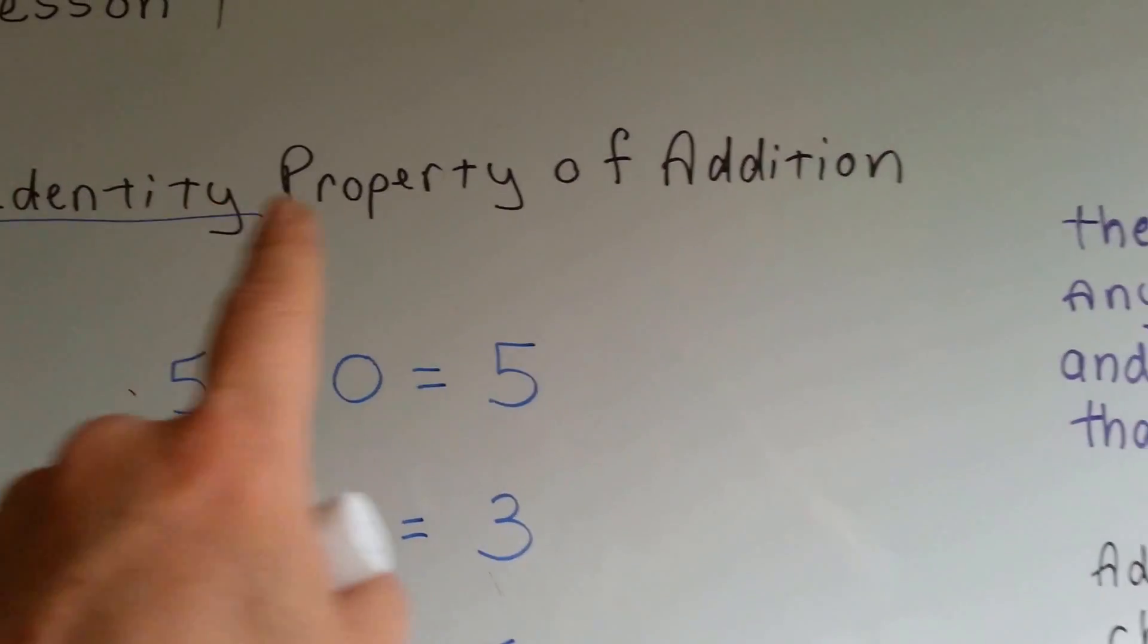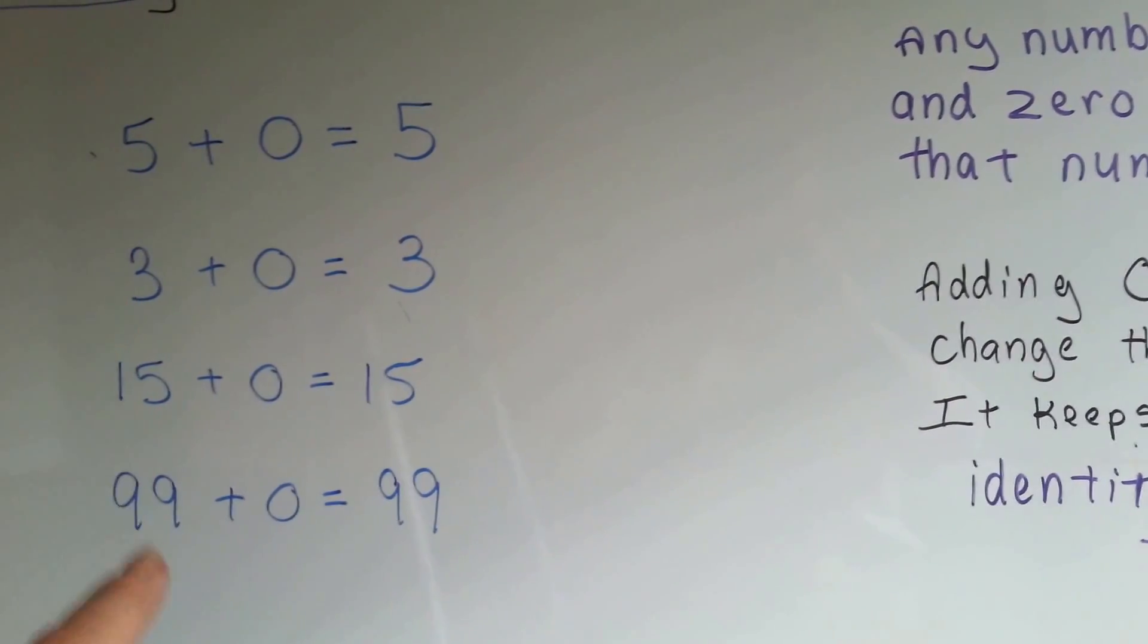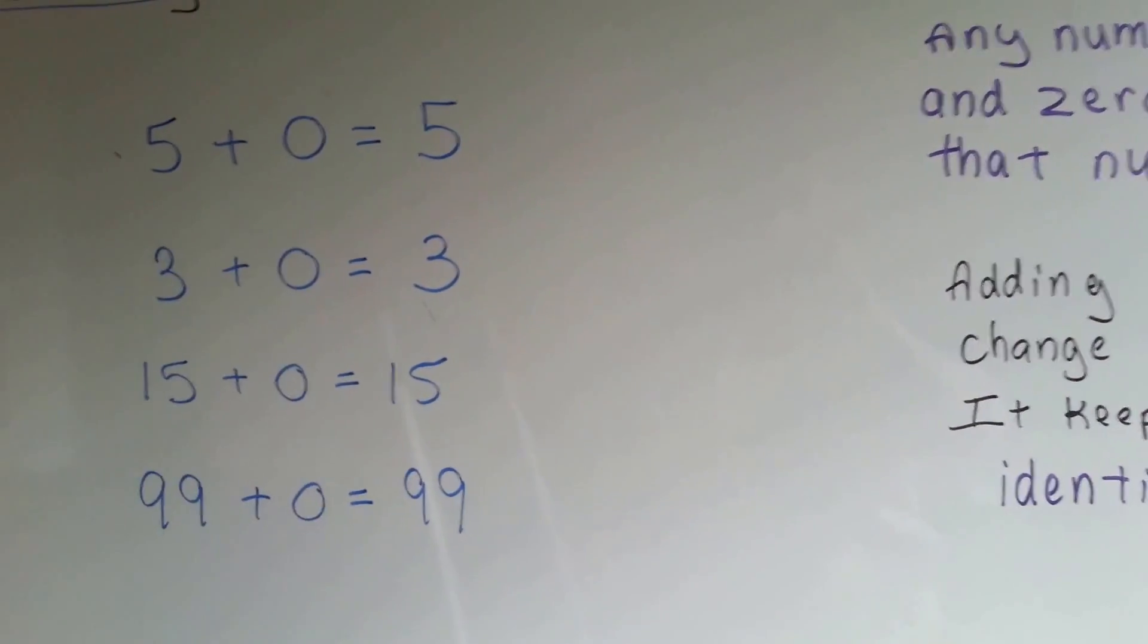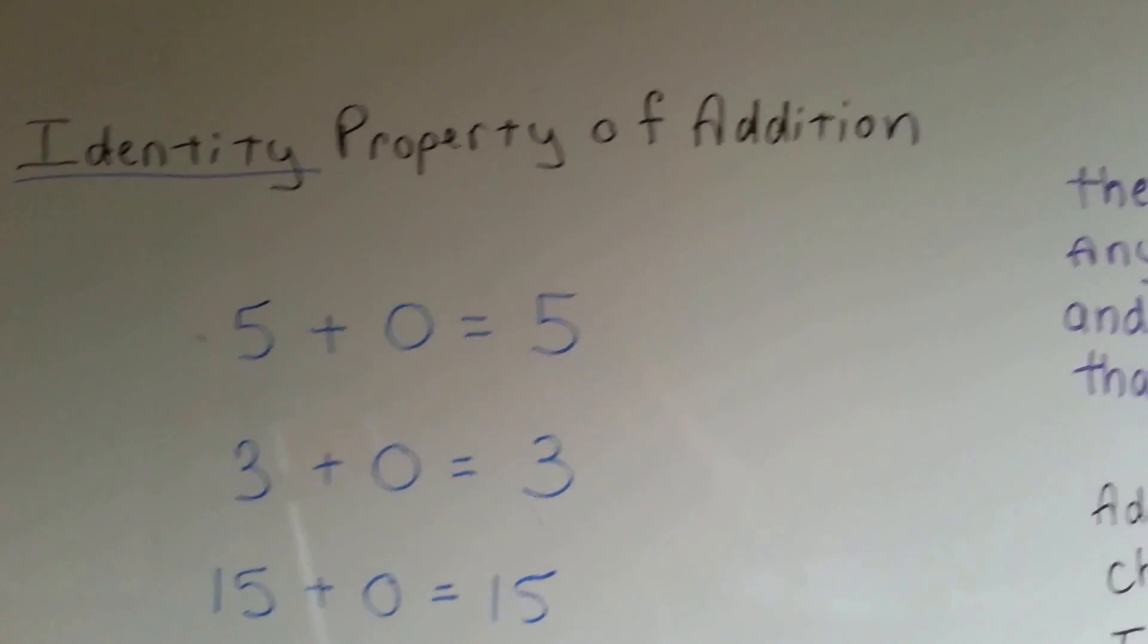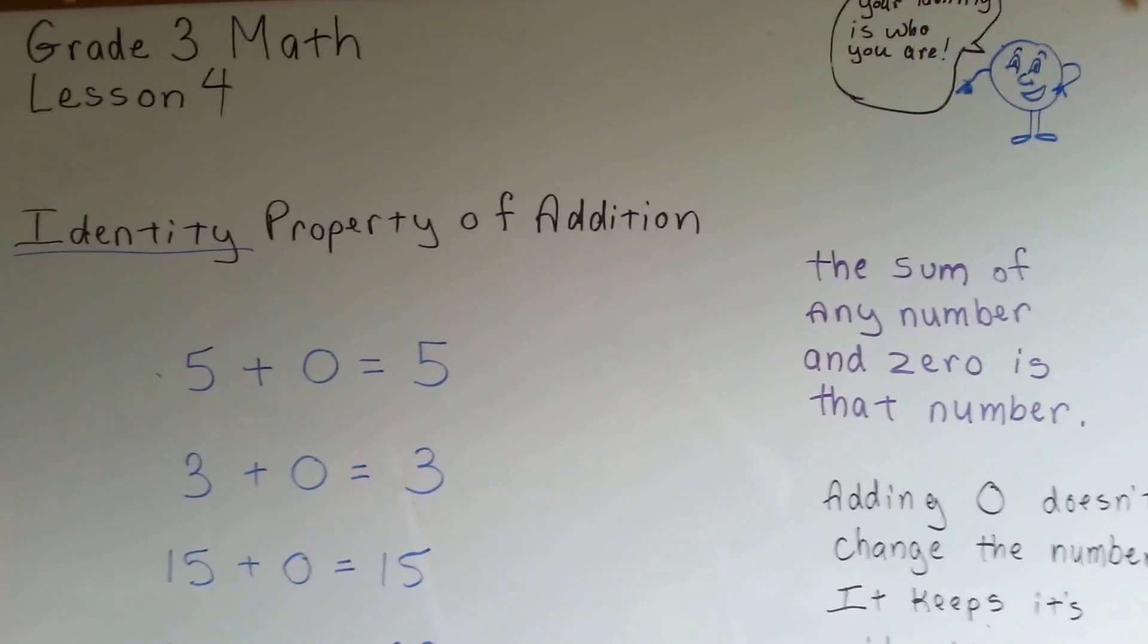So the identity property of addition says that it's going to stay who it is. The zero is not going to change it. Identity property of addition. Wasn't that easy? See you next lesson.